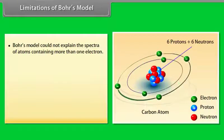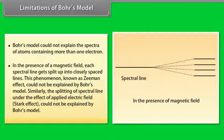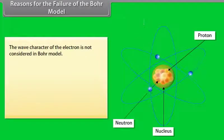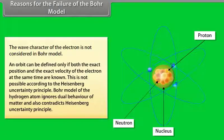Limitations of Bohr's model: (1) It could not explain the spectra of atoms containing more than one electron. (2) In the presence of a magnetic field, each spectral line splits into closely spaced lines (Zeeman effect), which Bohr's model could not explain. Similarly, splitting under an applied electric field (Stark effect) could not be explained. The wave character of the electron is not considered in Bohr's model; an orbit can be defined only if both exact position and exact velocity of the electron are known simultaneously, which is impossible according to Heisenberg's Uncertainty Principle.